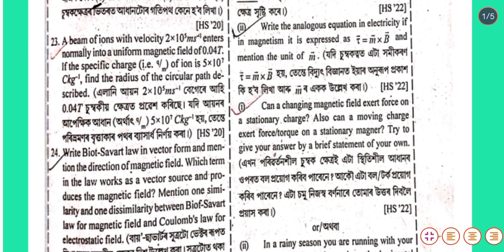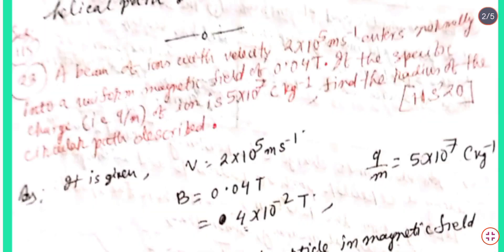Answer: It is given that velocity is 2×10⁵ meter per second, the magnetic field B is 0.04 tesla, and the specific charge q by m is 5×10⁷ coulomb per kg.